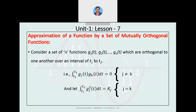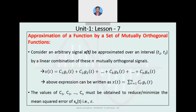From the two expressions as already discussed in the previous lesson: a and b are the two vectors; similarly here, in place of those two signals, we have g suffix j and g suffix k as the two signals. Next, consider an arbitrary signal x(t).